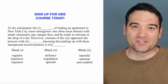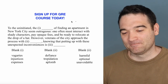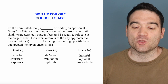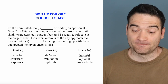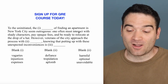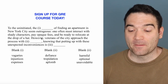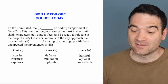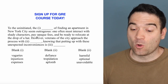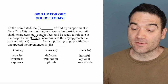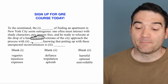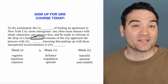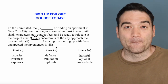Here's a GRE vocab question. Let's take a look. 'To the uninitiated, the blanks of finding an apartment in New York City seem outrageous. One must often interact with shady characters, pay opaque fees, and be ready to relocate at the drop of a hat. However, veterans of the city approach this process with blank, knowing that putting up with these unexpected inconveniences is blank.'